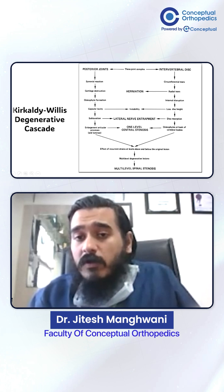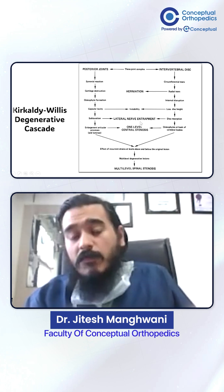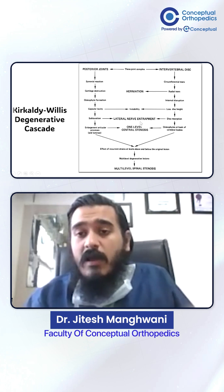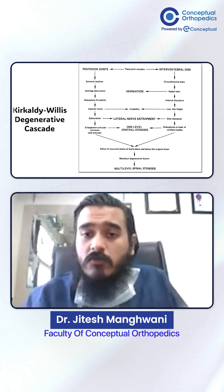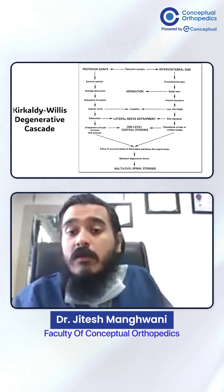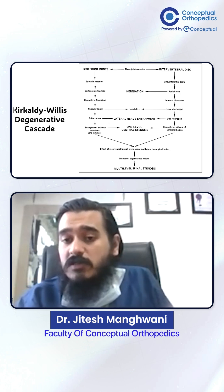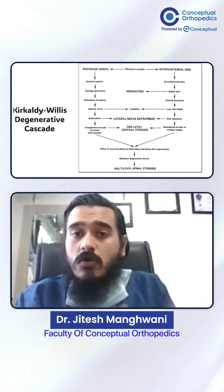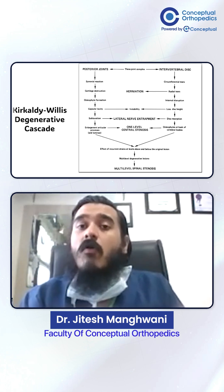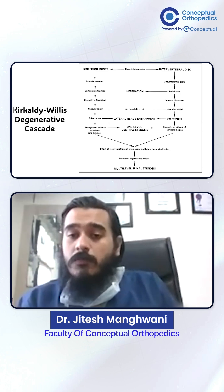Osteophytes form at the back of the vertebral bodies, causing central stenosis. Overall, the lamina and osteophytes at the back of the vertebral bodies contribute to the central stenosis. The effect of recurrent strain at the levels above and below the original lesion causes multi-level degenerative lesions and multi-level spinal stenosis. This overall is the Kirkaldy-Willis cascade.